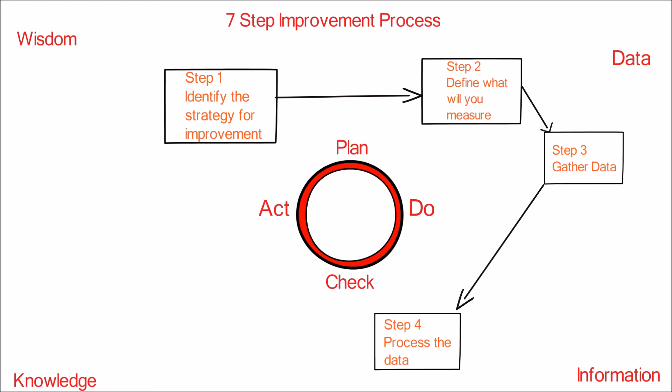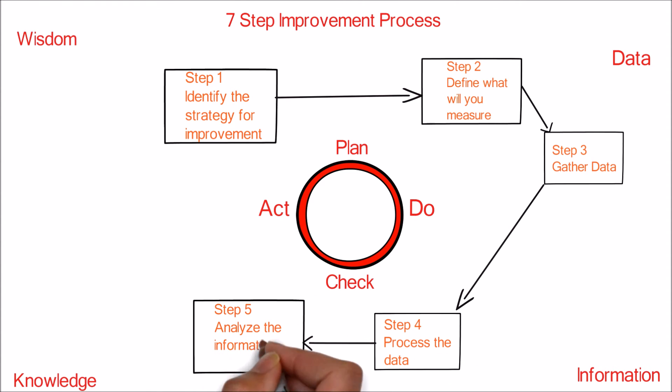The fourth step is to process the data. Once the data is gathered, it will be properly processed to get the desired information. Critical success factors and key performance indicators play a vital role in processing the data. The raw data is organized and divided according to its categories and operations, which makes it easy to process and transform the data into information.